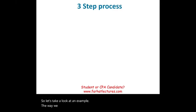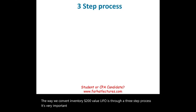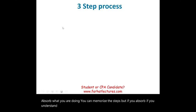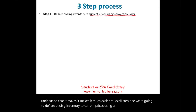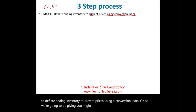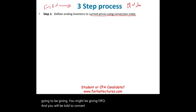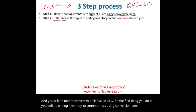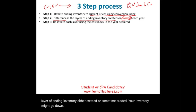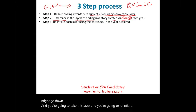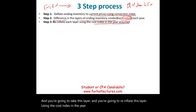The way we convert inventory to dollar value LIFO is through a three-step process. It's very important to understand — not just memorize — these steps, because absorbing what you're doing makes it much easier to recall. Step one: deflate ending inventory to base-year prices using a conversion index. Step two: compute the difference, which represents the layer of ending inventory either created or eroded. Step three: reinflate that layer using the cost index in the year it was acquired — very important.